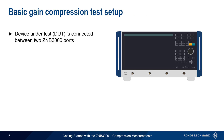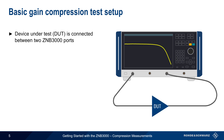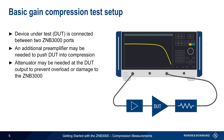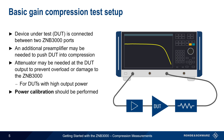The test setup for compression measurements is straightforward. The Device Under Test, or DUT, is simply connected between two ports of the ZMB3000. If the maximum output power of the ZMB3000 is not sufficient to push the DUT into compression, an additional preamplifier may be needed between the ZMB3000 output and the DUT input. At the DUT output, an attenuator may also be needed to prevent the ZMB3000 from being overloaded or damaged — particularly for DUTs that produce very high output power. A power calibration should be performed before making gain compression measurements, as it improves accuracy and can compensate for gain or loss from preamplifiers, attenuators, etc.